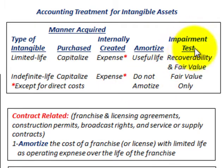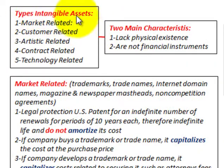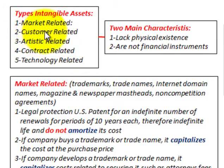Regarding impairment testing: for a limited life intangible, you perform both a recoverability test and a fair value test if required. For an indefinite life intangible, you only perform the fair value test. This is just an overview of the basic definitions of intangible assets and how you would capitalize or expense them — a basic outline for market, customer, artistic, contract, and technology-related intangible assets.